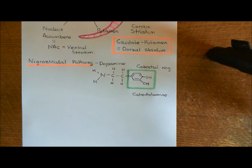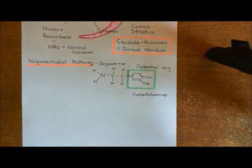The neurons in these areas are going to send their axons into the caudate putamen — the dorsal striatum — and that's where they're going to be releasing dopamine. That dopamine is going to have a very key function in the controlling of voluntary movement.